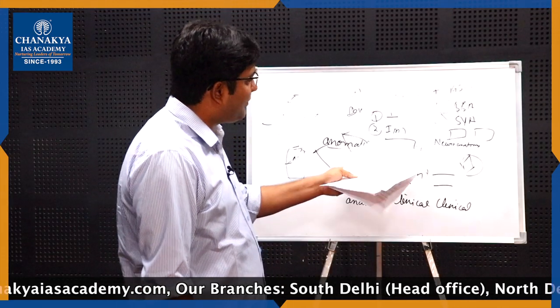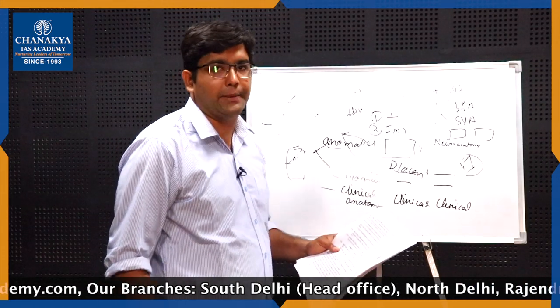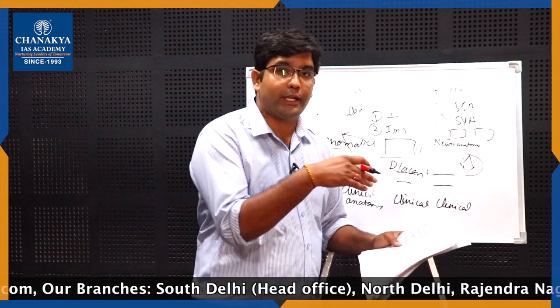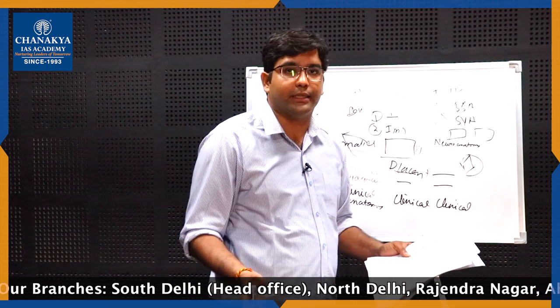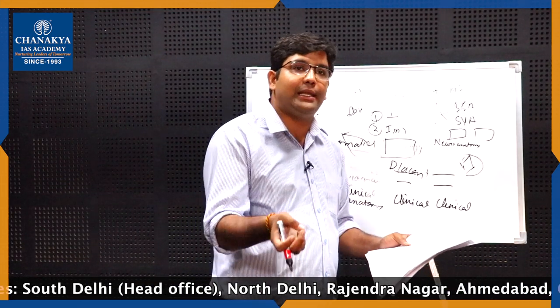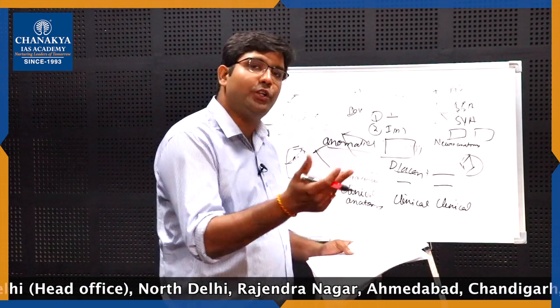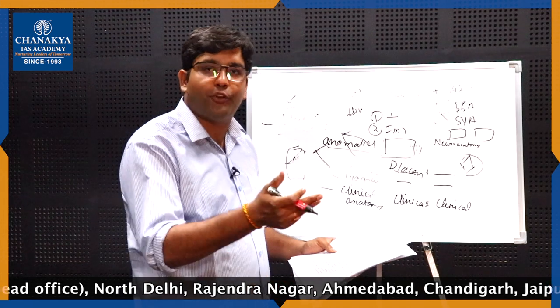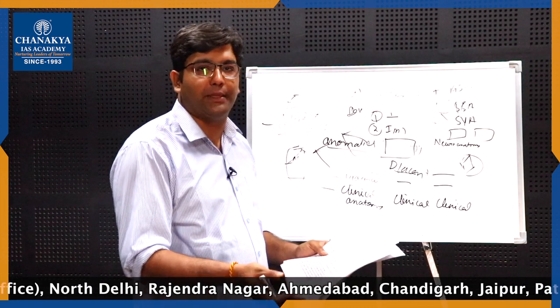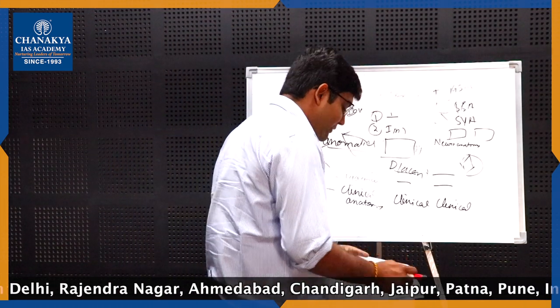Since it is a seven-mark question, only two pages will be there — you would not have sufficient space. Just draw the diagram and that will suffice. Had it been a 20-mark question, you would have to explain each anomaly and then draw the diagram.